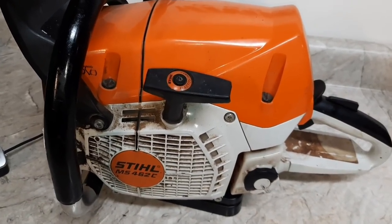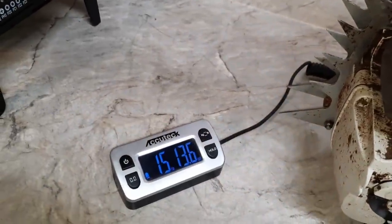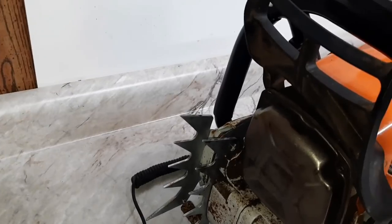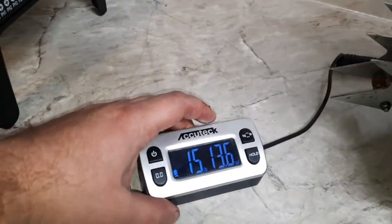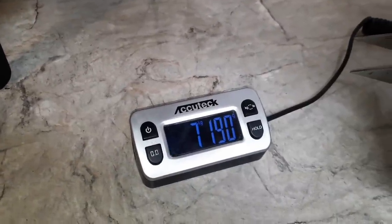Stihl 462. 15 pounds, 13.6 ounces, dual spikes and the three-quarter wrap. Here's the metric number.